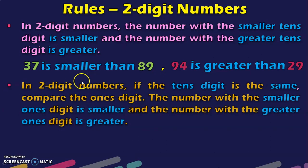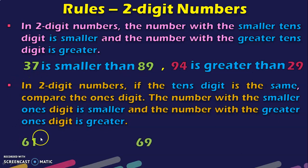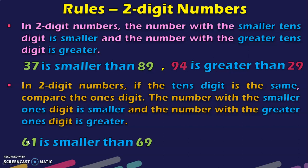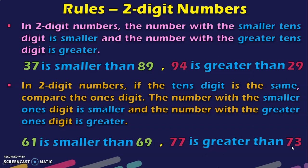The next rule is: in 2-digit numbers, if the 10s digit is the same, compare the 1s digit. The number with the smaller 1s digit is smaller and the number with the greater 1s digit is greater. For example, 61 and 69 have the same 10s digit. Looking at the 1s digit we have 1 and 9. Since 1 is lesser than 9, 61 is smaller than 69. Another example: 77 and 73 have the same 10s place, so look at the 1s place. We have 7 and 3; since 7 is greater than 3, 77 is greater than 73.